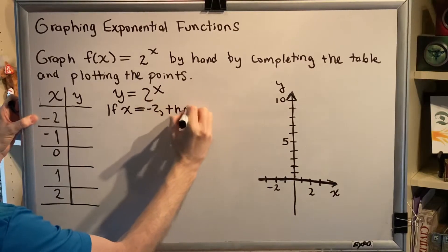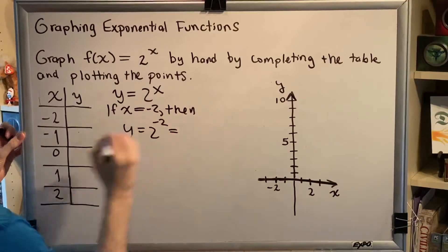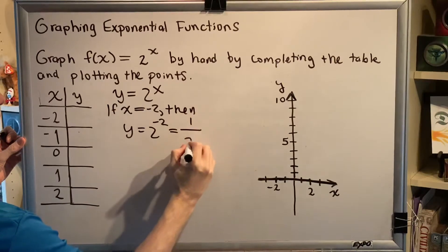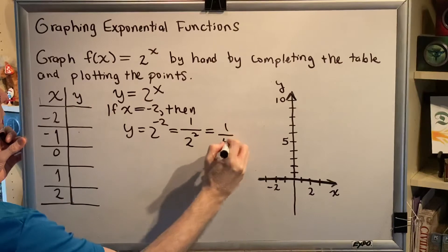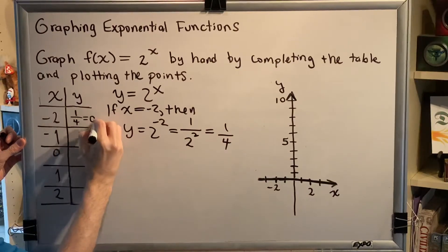then y = 2^(-2), which, using our knowledge of intermediate algebra rules, is the same as 1 over 2^2, which is 1/4, or the decimal 0.25.